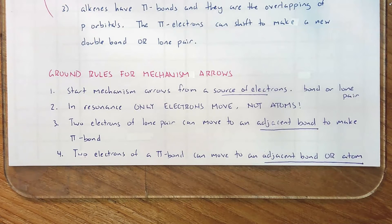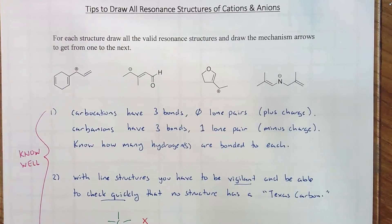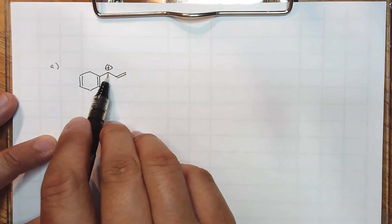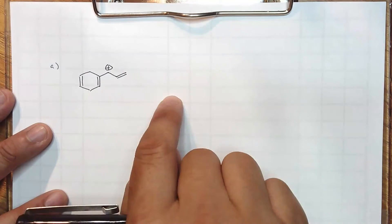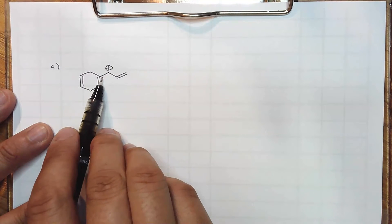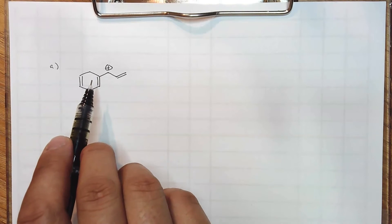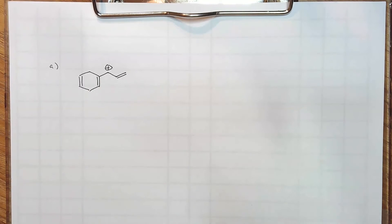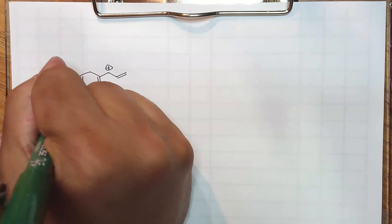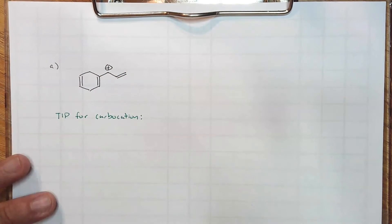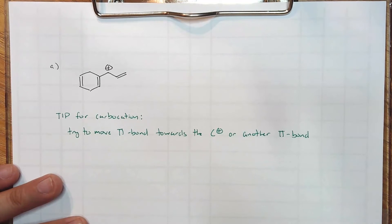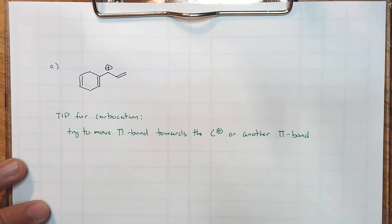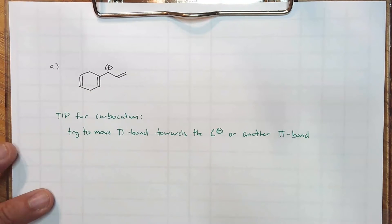Let's look at that first structure. That first structure is a carbocation. Automatically you should know that that carbon has three bonds — carbocations always have three bonds — so that third bond has to be to a hydrogen. In each resonance structure, that carbon off of the ring has to have one and only one hydrogen, because atoms do not move in resonance. The tip for carbocations: most likely you will be moving a pi bond. I'm going to draw all my mechanism arrows in pink and the resulting structures in blue. The one in black is the one given to me by the problem.